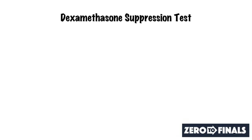So why do we do the dexamethasone suppression test? The idea is firstly to confirm a diagnosis of Cushing's syndrome and excessive cortisol, and secondly to understand what the cause of that Cushing's syndrome is — what the source of that excessive cortisol is.